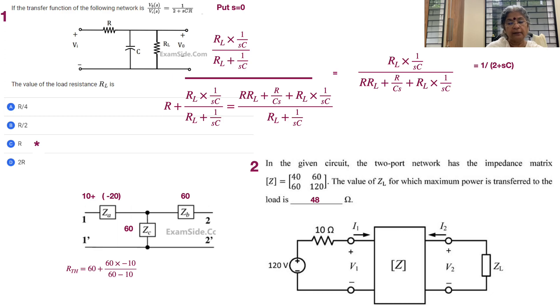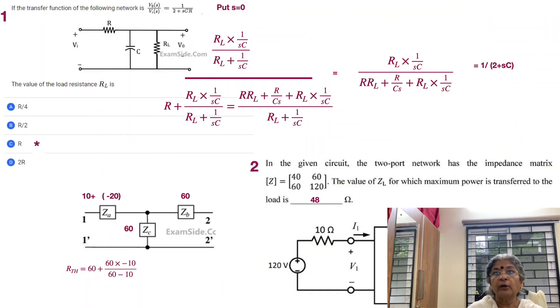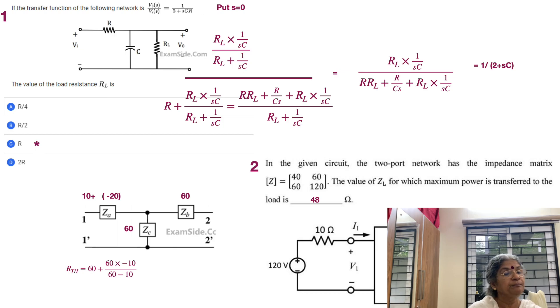We have had a brief glimpse at Laplace transforms, which offers the wonderful concept of representing a system using a transfer function. The transfer function asked is V(s)/V_i(s) — output by input — where initial conditions are set to zero, equal to 1 divided by (2 + sCR). The value of the load resistance RL is what is asked, and we are already given the transfer function.